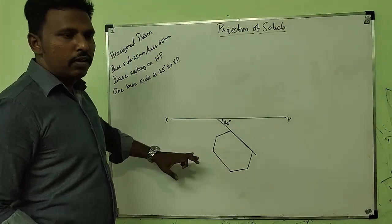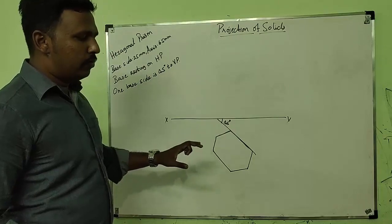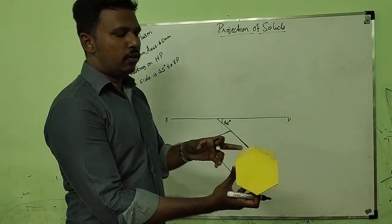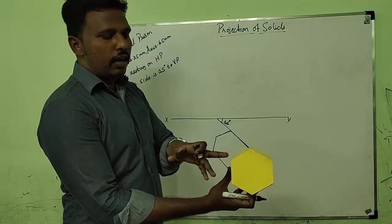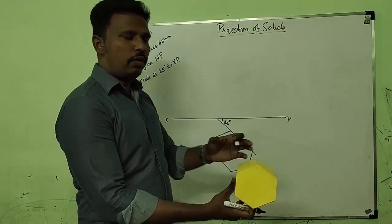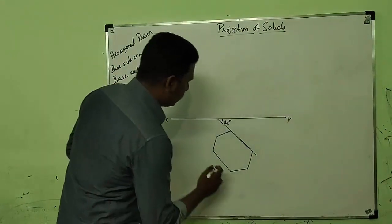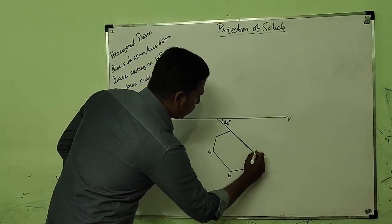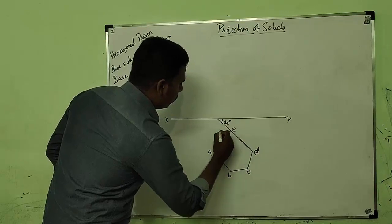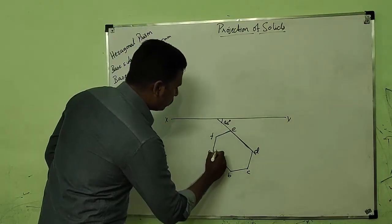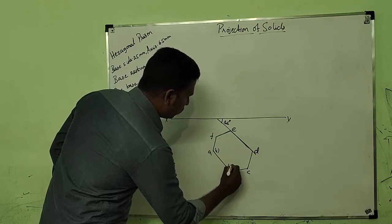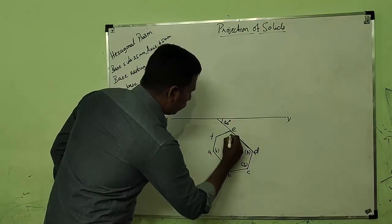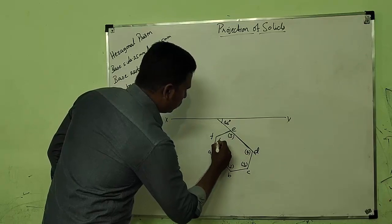This is the hexagonal prism having two faces — one on the front and the other on the rear. Let us name the front face as A, B, C, D, E, and F, and the rear face as 1, 2, 3, 4, 5, and 6.